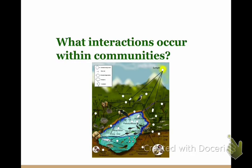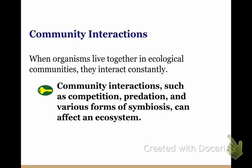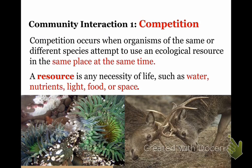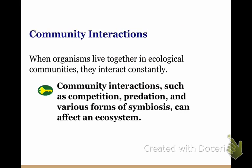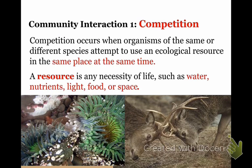So what interactions occur within communities? Community interactions such as competition, predation, and various forms of symbiosis can affect an ecosystem. The first type of community interaction is competition. Competition occurs when organisms of the same or different species attempt to use an ecological resource in the same place at the same time.